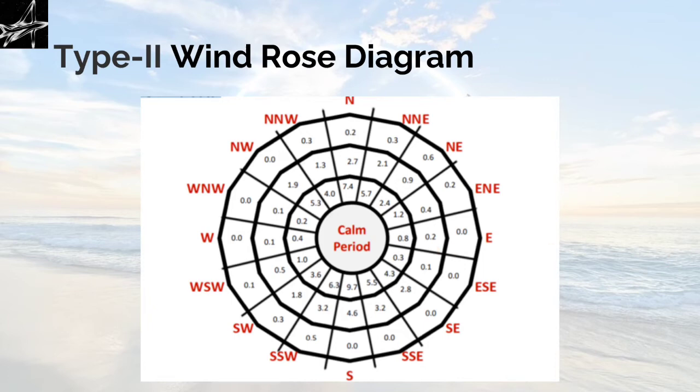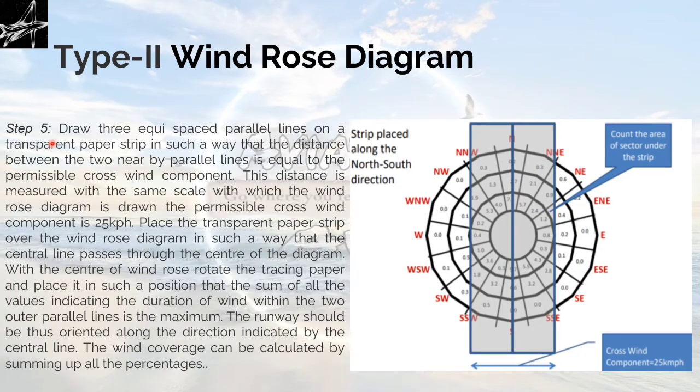This is how all the segments are filled with the data. After filling this, step 5: draw 3 equispaced parallel lines on a transparent paper strip in such a way that the distance between the 2 nearby parallel lines is equal to the permissible crosswind component. This distance should be equal to the permissible crosswind component of the territory from where you are drawing the wind rose diagram. This distance is measured with the same scale with which the wind rose diagram is drawn. The permissible crosswind component is 25 km per hour as taken here.